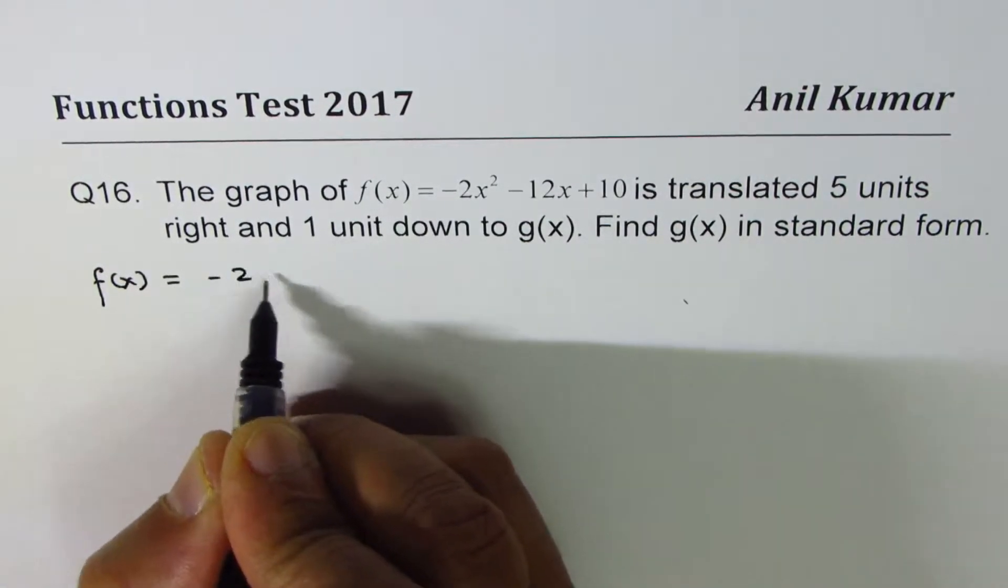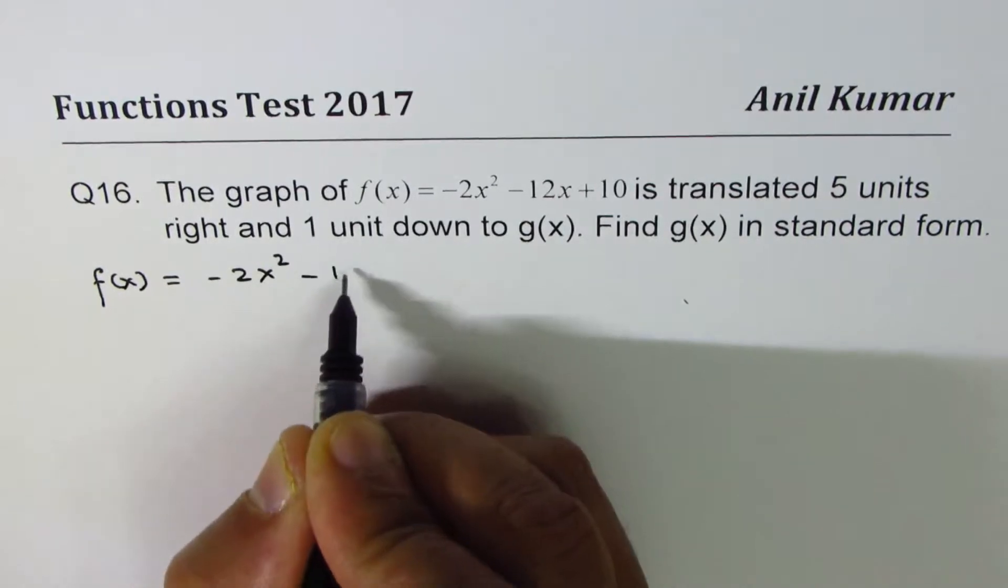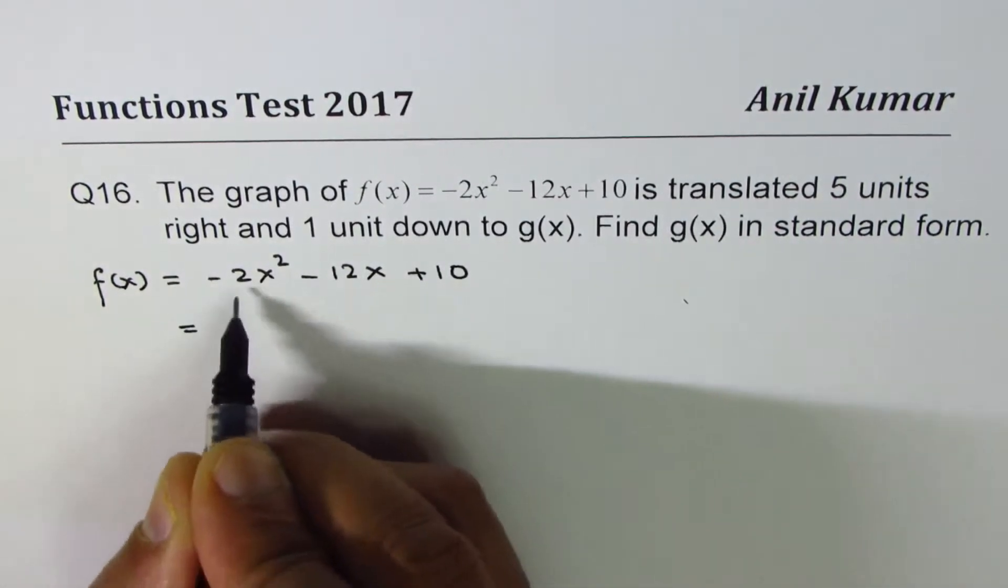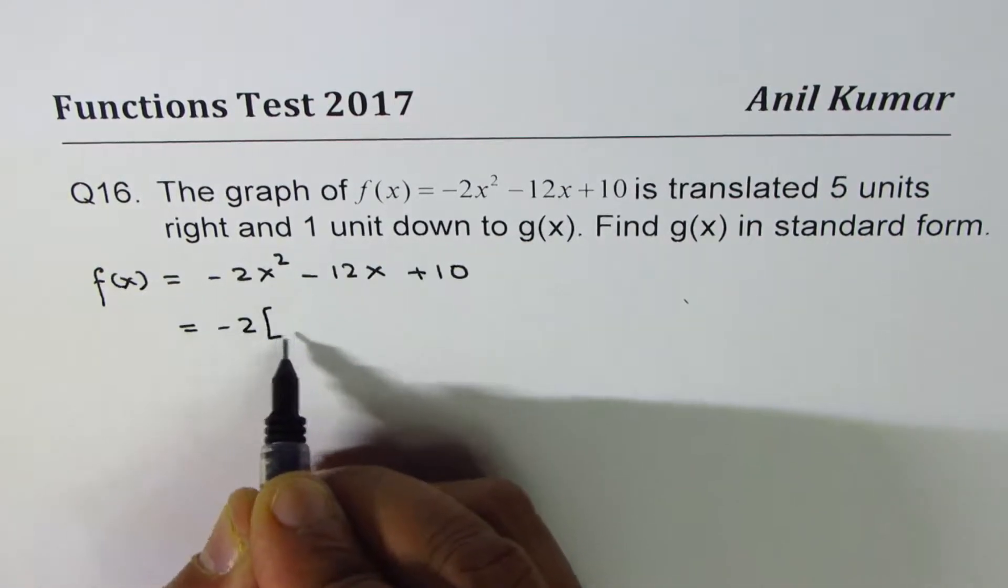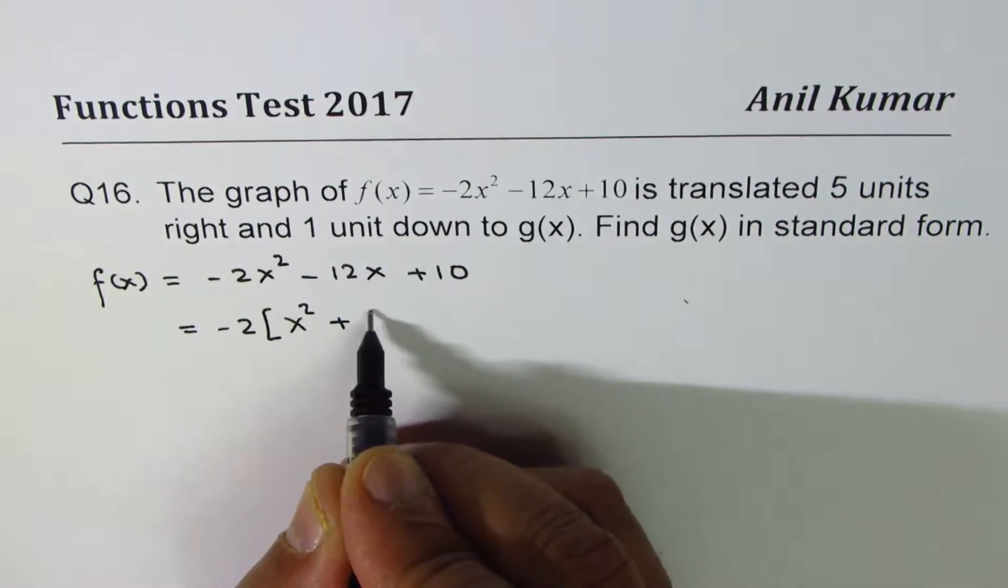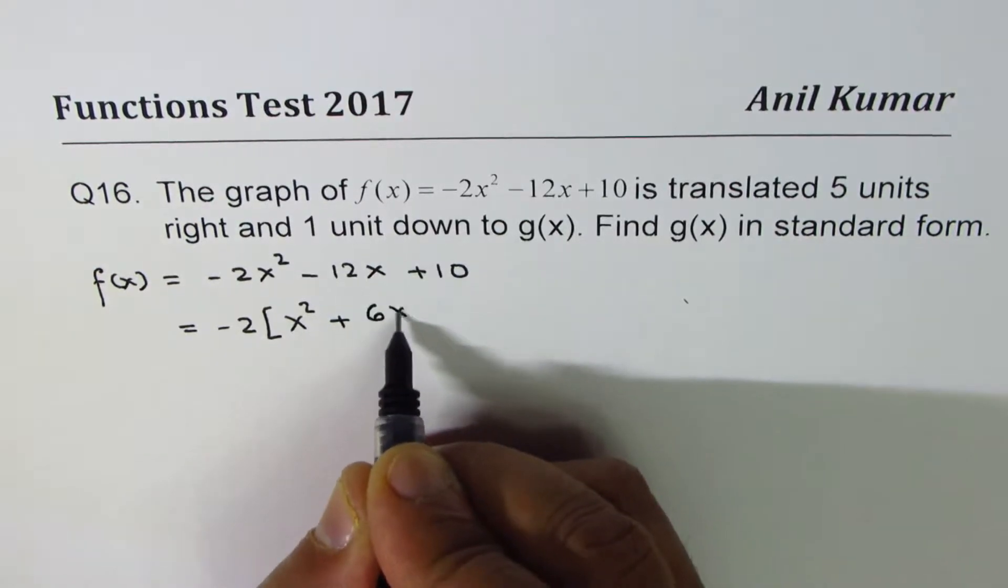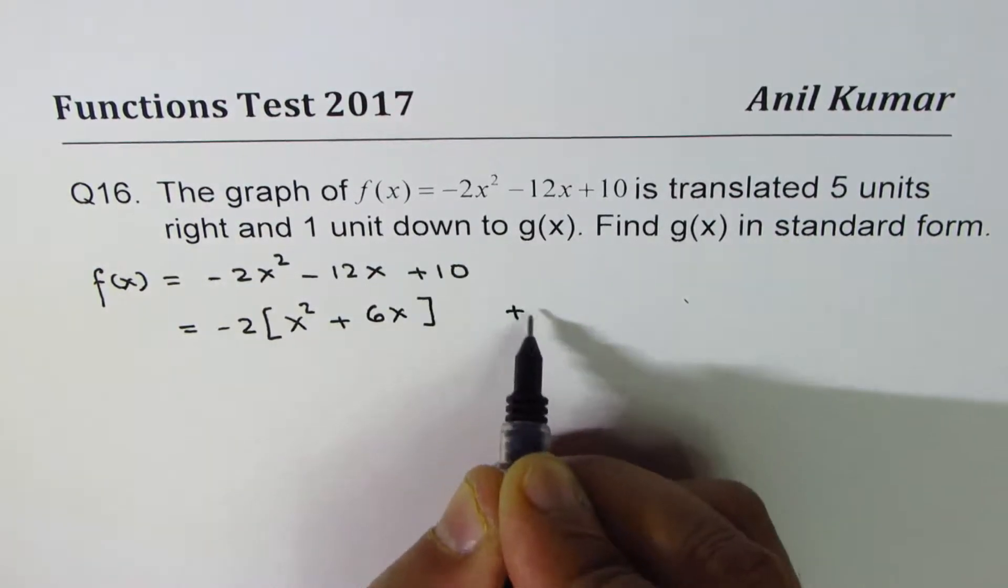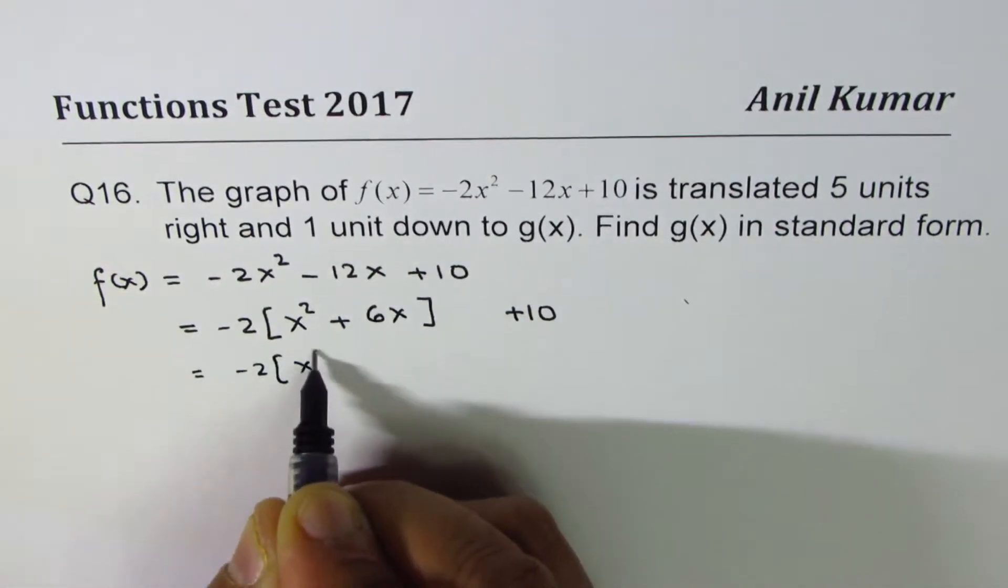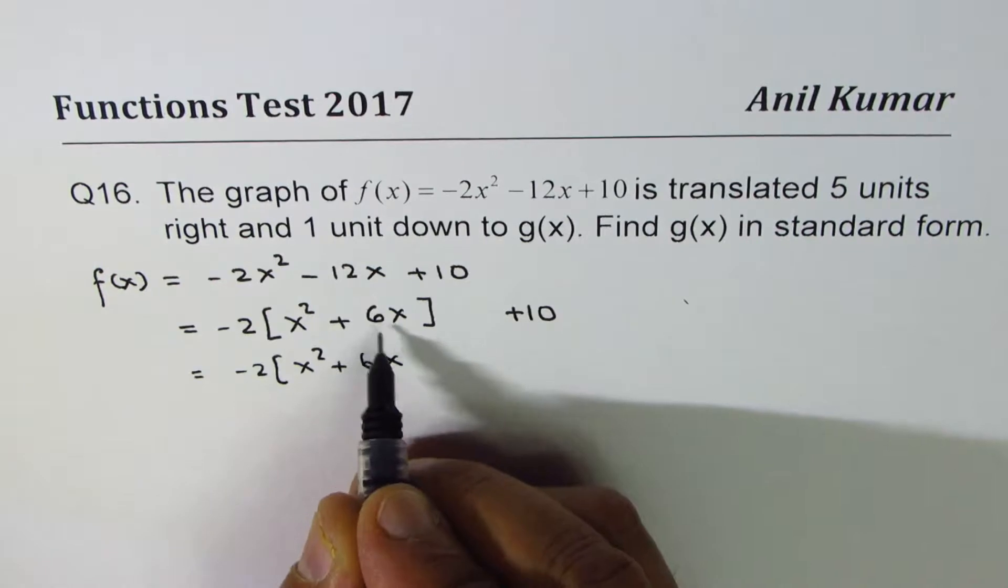Let's write this in vertex form. We are given f(x) = -2x² - 12x + 10, so we can take -2 common to get -2[x² + 6x] + 10.